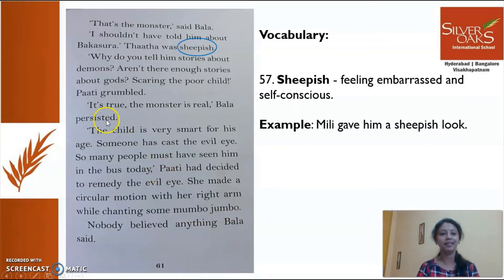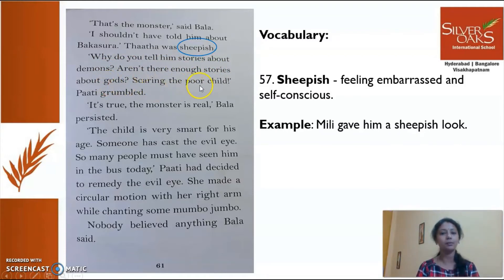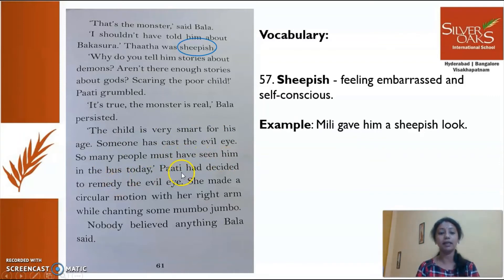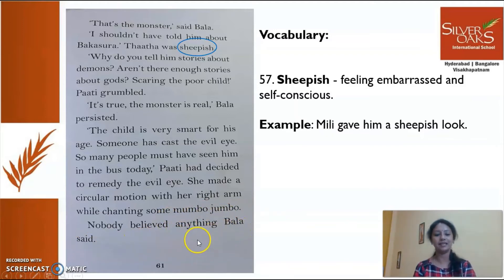Now let's read together: 'That's the monster,' said Bala. 'I shouldn't have told him about Bakasura,' Tata was sheepish. 'Why do you tell him stories about demons? Aren't there enough stories about gods, scaring the poor child?' Patty grumbled. 'It's true, the monster is real,' Bala persisted. 'The child is very smart for his age. Someone has cast the evil eye — so many people must have seen him in the bus today.' Patty had decided to remedy the evil eye. She made a circular motion with her right arm while chanting some mambo jumbo. Nobody believed anything Bala said.